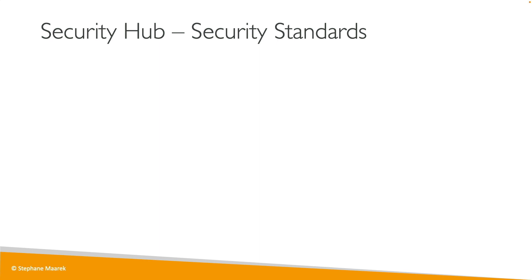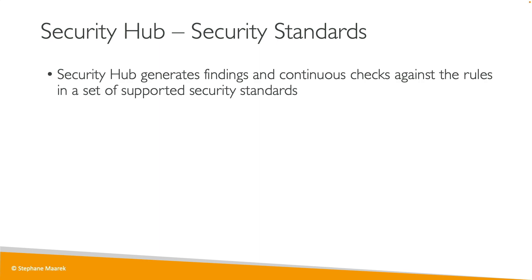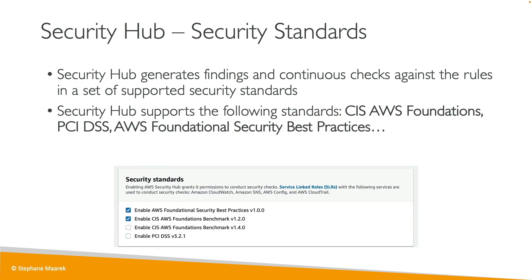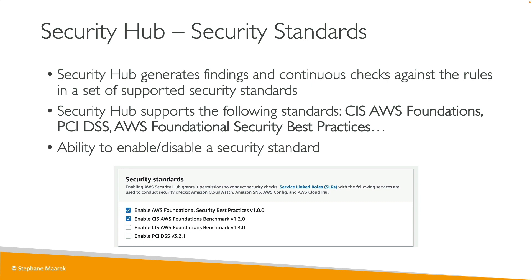Security Hub has a few security standards, so it will generate findings and continuous checks against all these standards. For example, from the standard one that comes with Security Hub, we have the CIS AWS Foundations, PCI-DSS, and the AWS Foundational Security Best Practices. You can enable these in the console, and it's possible to enable or disable a security standard.